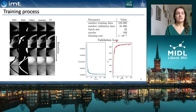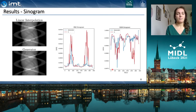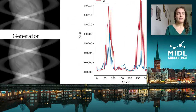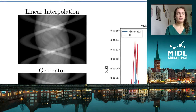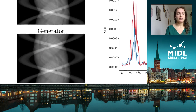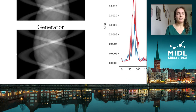Accordingly, the validation loss for the mean squared error and the structural similarity index is getting better. The results show that the generator network is capable of replacing the missing metal trace in the sinogram extremely well. If we compare this with linear interpolation, we can see some artifacts which are not present in the generator sinogram.